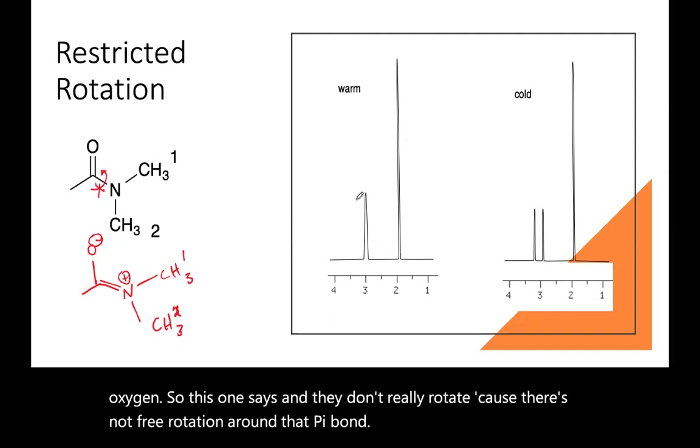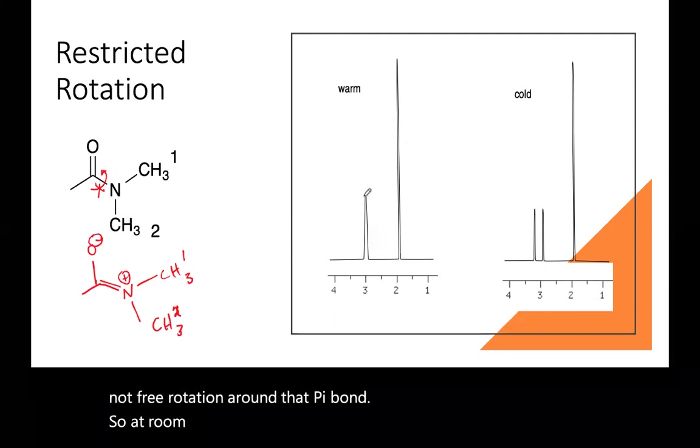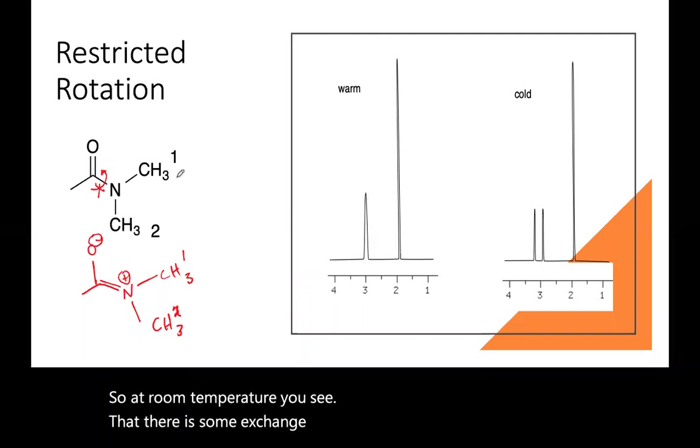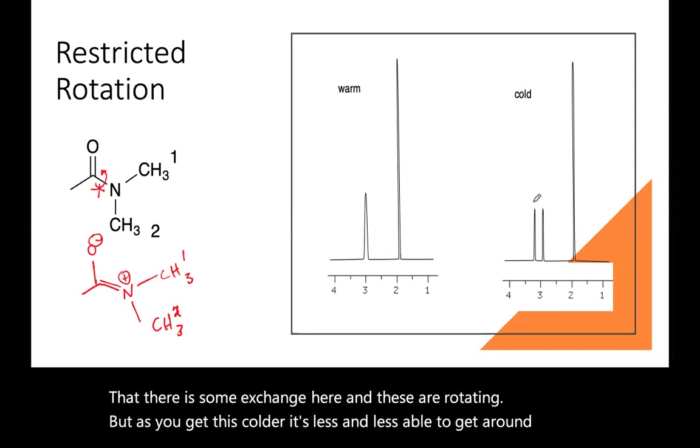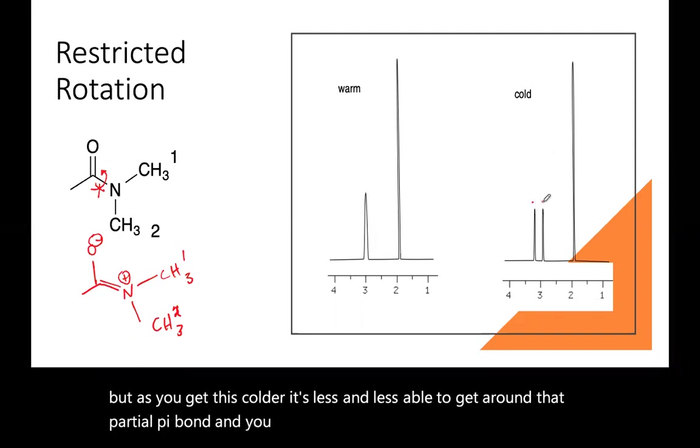So at room temperature, you see that there is some exchange here. And these are rotating. But as you get this colder, it's less and less able to get around that partial pi bond. And you see two distinct methyl groups. So that's a very classic example.